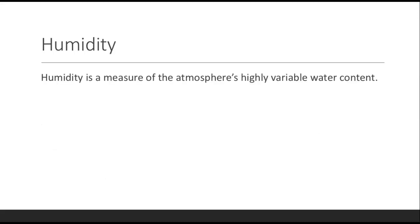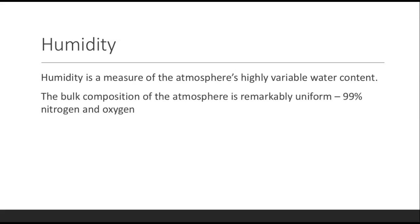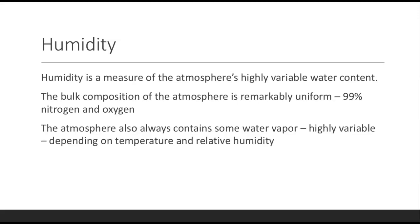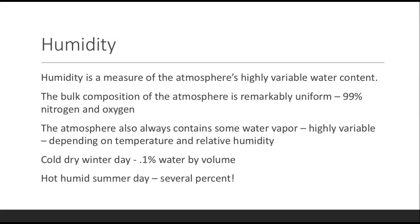Humidity is the measure of the atmosphere's highly variable water content. The bulk composition of the dry atmosphere is remarkably uniform — 99% of it is nitrogen and oxygen. The atmosphere also contains some water vapor, but it's highly variable and dependent on temperature and relative humidity. On a cool, dry winter day, you can have less than 0.1% water by volume, whereas on a hot, humid summer day, you could have up to several percent of humidity. Humidity is simply the amount of water vapor in the atmosphere.